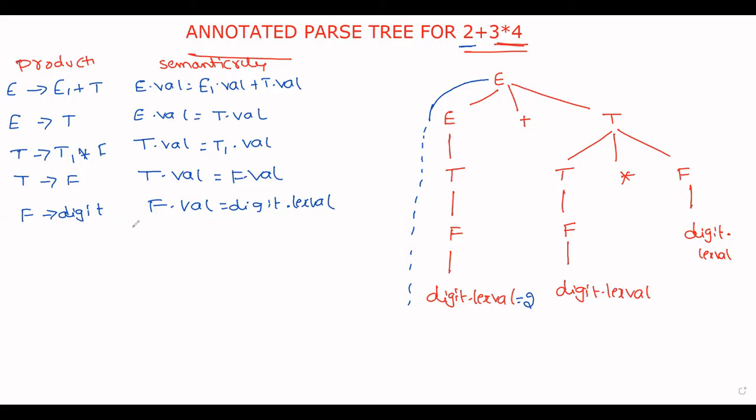First F. What is the value of F? F dot VAL. What is annotated parse tree? You have to write the attributes for each and every grammar symbol. What is F dot value? It takes value from its children, that is digit dot lex 2. So now what is the value? T dot value of T. T dot value is F dot value. So T dot value is equal to F dot value 2.